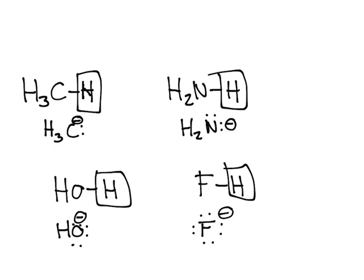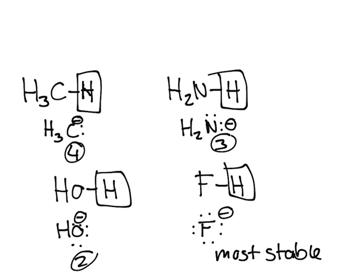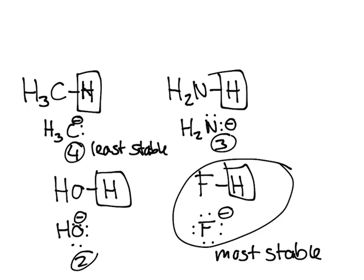So ranking stability, fluorine would be most stable, then OH would be number two, NH2 minus would be number three, and carbon would be number four, least stable. What that means is the less stable it is, the less likely it's going to be formed. We're always going to talk about stability of the conjugate base. The more electronegative the atom, the more stable the conjugate base. F-H would be the most acidic because its conjugate base is the most stable.